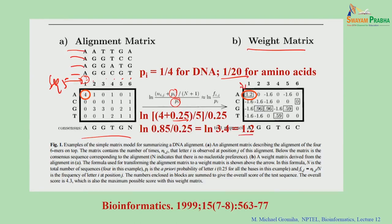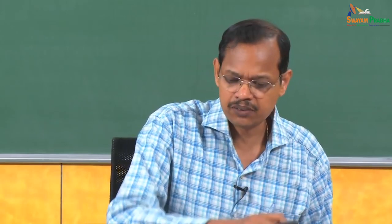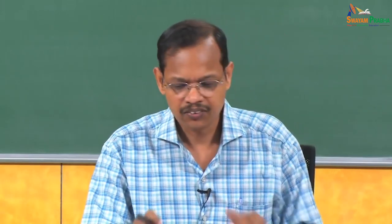If the count is 0, the score becomes: ln((0 + 0.25) / 5) normalized by 0.25, giving ln(0.2) which equals approximately −1.6. So you can convert any alignment matrix with many sequences into a weight matrix. Positions with high observed frequency get positive scores and positions with zero counts get negative scores.